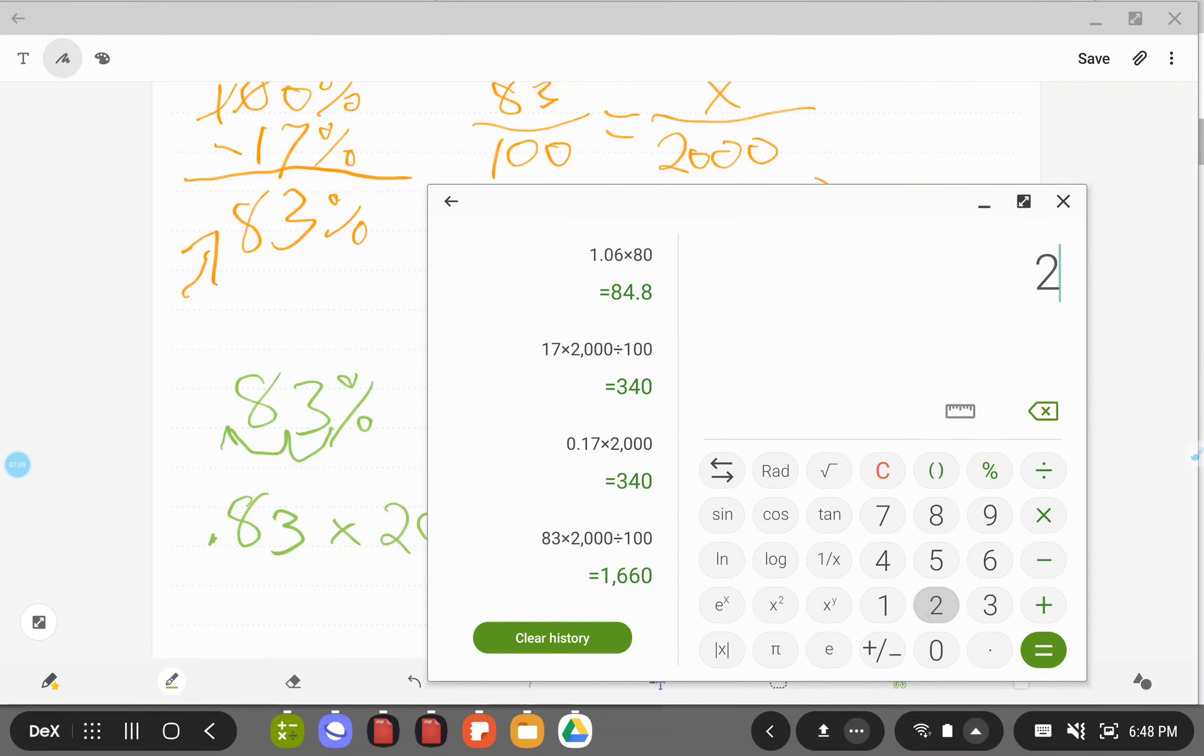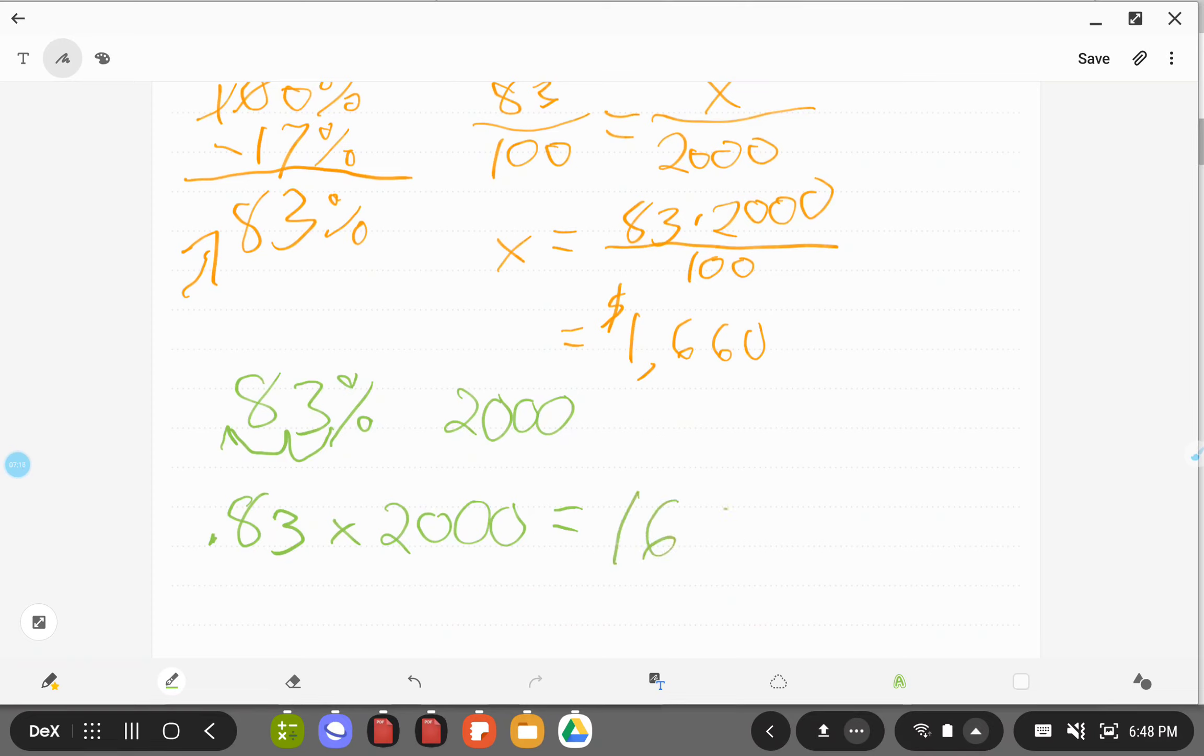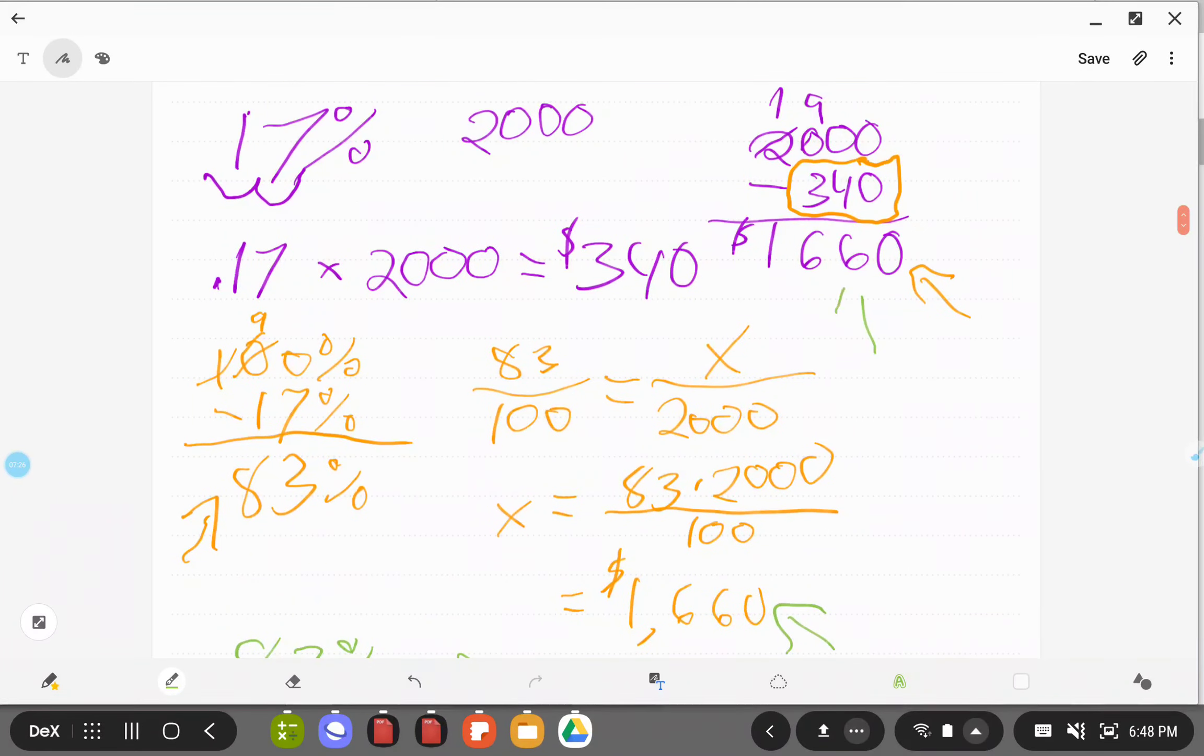So 2000 times 0.83 equals 1660, or $1,660. Same answer as before in all those scenarios.